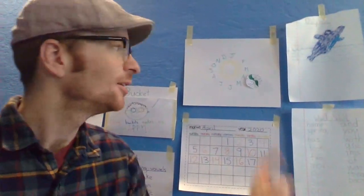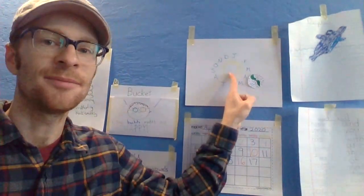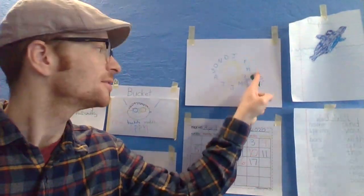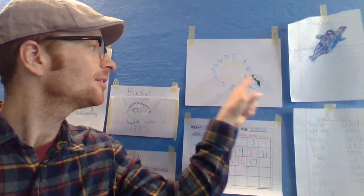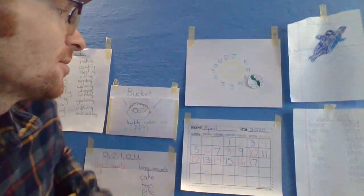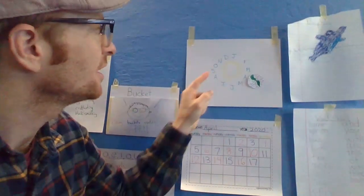So let's check out our months of the year. We have our sun in the middle and the months of the year go around it with our earth. So here we go.